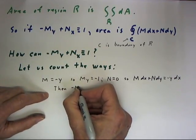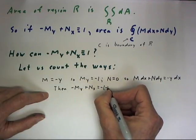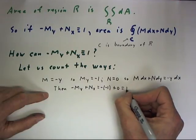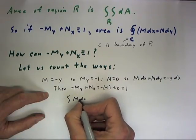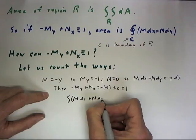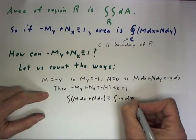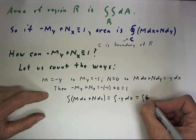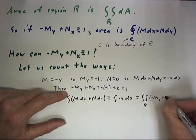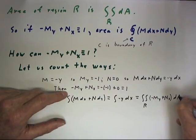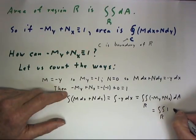Then -M_y + N_x equals the negative of -1 plus 0 equals 1. And the integral of Mdx + Ndy becomes the integral of -Ydx, and that has to equal the double integral over the region of -M_y + N_x dA, which equals the integral over the region of 1 dA.